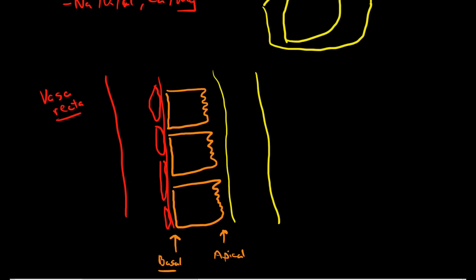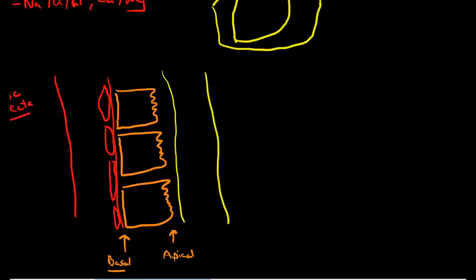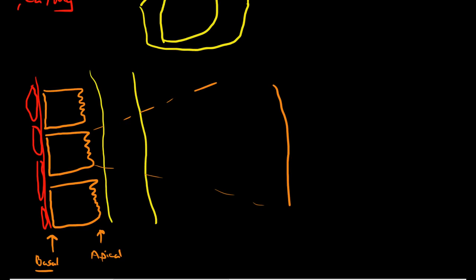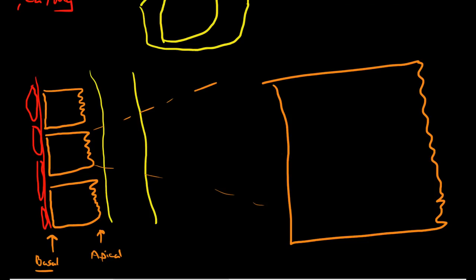At the apical surface—actually, let me start out at the basilar surface, and I'm going to draw one big giant cell so we can see what we're talking about here. So here at the basilar surface, we have some ion pumps. Most important among them, just like it's most important everywhere else in the body, is our friend, the sodium-potassium ATPase pump.